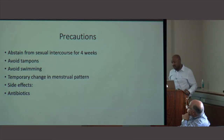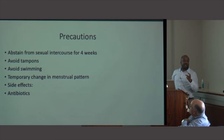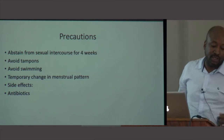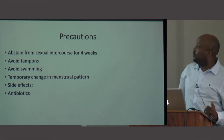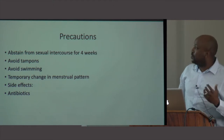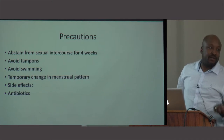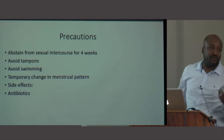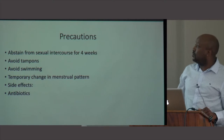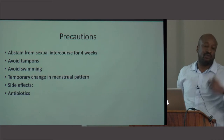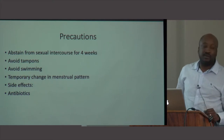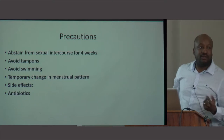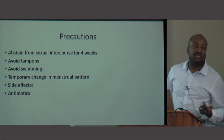Once you're done with the LLETZ, give the patient an information leaflet and explain the precautions and side effects. They should abstain from sexual intercourse for four weeks, avoid using tampons, and avoid swimming. Explain that the next menstrual cycle may be heavier than normal and they may experience some discharge. Importantly, highlight the danger signs so they know to return: signs of infection such as fever, severe pain, or heavy bleeding. Discuss the role of antibiotics, especially for immunocompromised patients, and prescribe some analgesics as well.